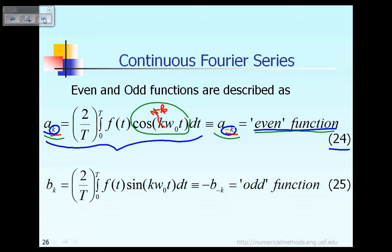Similarly, we have a formula to define the constant b sub k as indicated in equation 25. According to equation 25, b sub k is equal to 2 over T times the integral from 0 to T of f(t) times sin(k·ω₀·t) dt. Now, that function b sub k, we say it is an odd function.